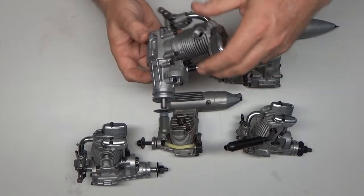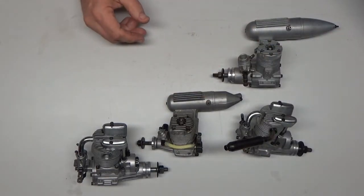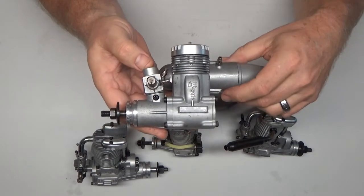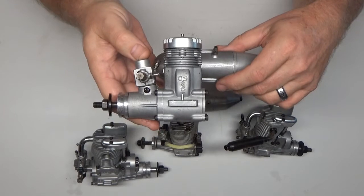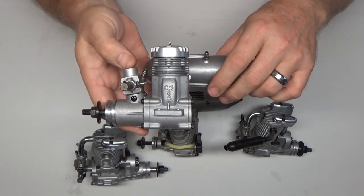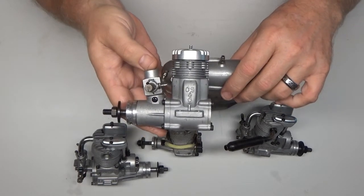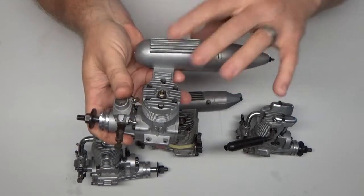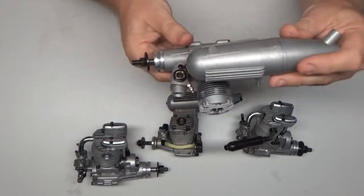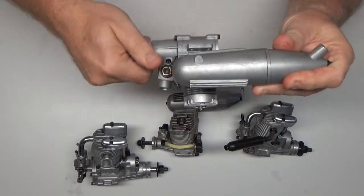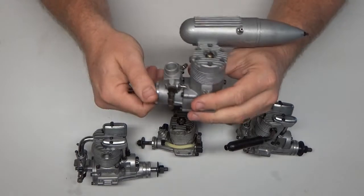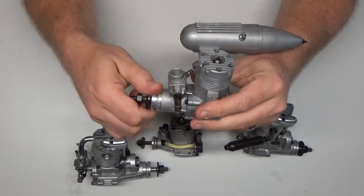This is an OS 40 FSR that he had sent. Now it didn't come with a muffler and this engine was really gummed up. It's been cleaned up, I've replaced the bearings, I actually have run it for about 45 seconds.